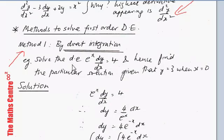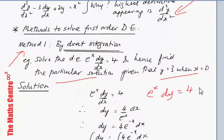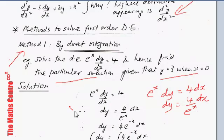Solve the differential equation: e^x times dy/dx equals four, and hence find the particular solution given that y equals three when x equals zero. We have e^x dy/dx = 4. Cross-multiplying, e^x dy = 4 dx, and bringing e^x to the right gives dy = 4/e^x, which is 4e^(−x).